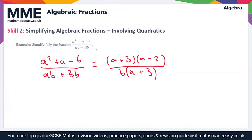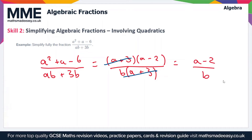Now we have double brackets on the top and a single bracket on the bottom. One of the brackets on the top will cancel the bracket on the bottom — (a plus 3) divided by (a plus 3) equals 1. So we're left with (a minus 2) over b, which is the simplified form of the full fraction.